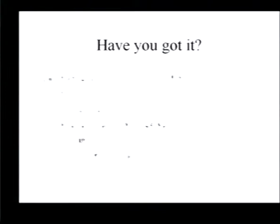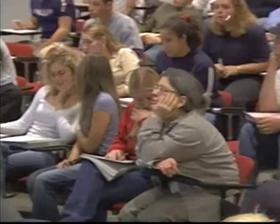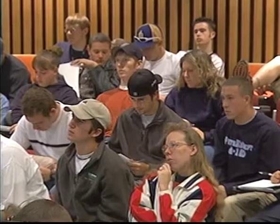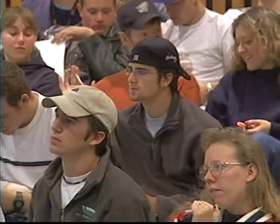We can divide eukaryotes further: animals lack a cell wall, chloroplasts, and a central vacuole. Plants lack flagella in most cases, as well as lysosomes and centrioles. A prokaryotic cell would be expected to lack a membrane-bound digestive system — that's the answer — because prokaryotes lack internal membranes, so membrane-bound structures like lysosomes are a definite no for prokaryotes.